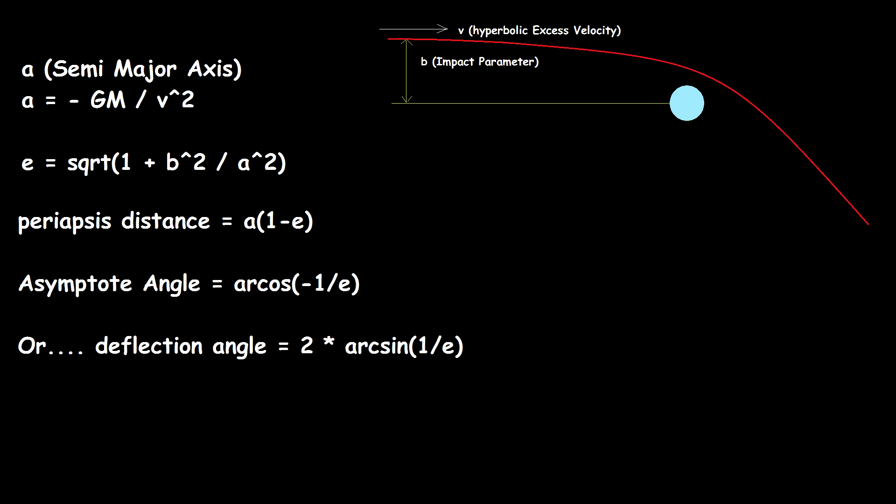Now you can compute the semi-major axis, even though it's a hyperbolic orbit, you can compute this value. It's a = -GM / v^2, M of course being the mass of the body, divided by v squared. Like that's basically the same thing that you would get, but it's negative, right, for a regular orbit. Now the eccentricity, as you know, always has to be greater than 1 for a hyperbolic orbit, and it's simple. It's e = sqrt(1 + b^2/a^2). Of course, b is the impact parameter, a is the semi-major axis, and you get this number.